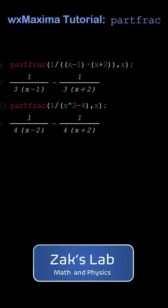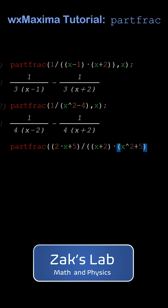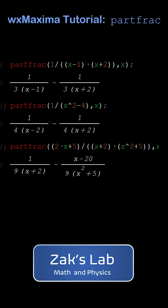The next increase in complexity is to use an irreducible quadratic together with a linear factor. We put a linear function in the numerator and make the denominator (x plus 2) times (x squared plus 5), which is an irreducible quadratic. We see that the partial fractions decomposition has a constant over the linear factor and a linear term over the quadratic factor.